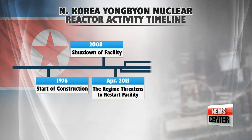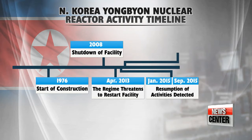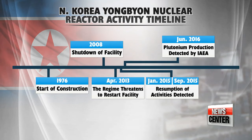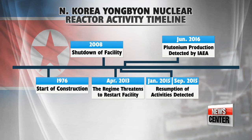However, after five years, the reclusive state threatened to restart its Yongbyon plant to expand its nuclear weapons arsenals. After that in 2015, activity in the facility was detected several times by the website 38 North, until the IAEA detected plutonium production in the nuclear plant on Tuesday.